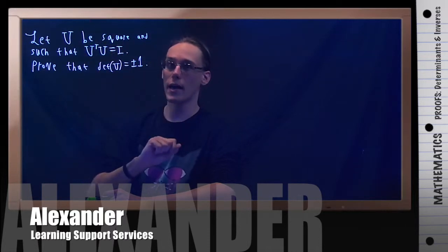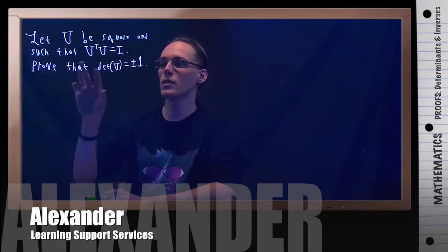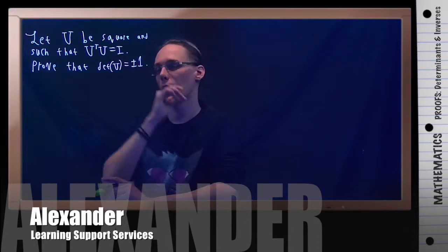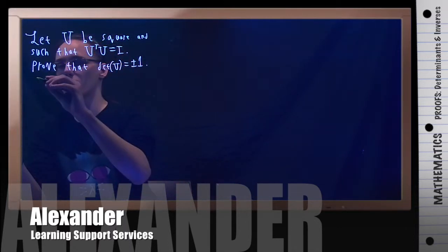If we assume all that, prove that the determinant of U has to be either plus or minus 1. I want to make one note that I'm going to need in this proof.